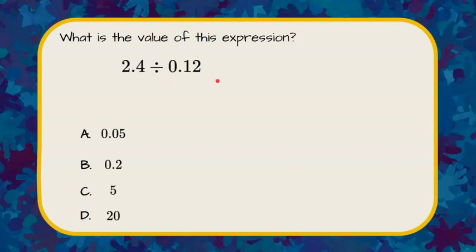So the first thing we need to recognize is that our dividend, 2.4, divided by our divisor, 0.12, will equal our quotient. And our quotient will be one of these answers.